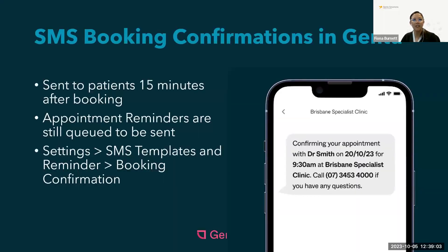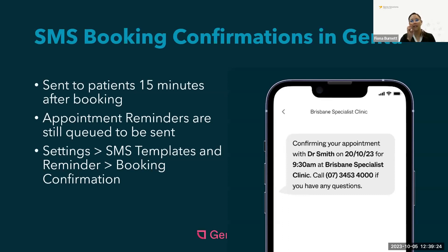Another new feature introduced most recently within Gen 2 is booking confirmation SMSs. These booking confirmation SMSs are sent to patients 15 minutes after booking in their appointment into Gen 2 for the first time. All patients will continue to receive an appointment reminder in addition to the booking confirmation. To turn on this feature, you can go to Settings, SMS Templates and Reminder, Booking Confirmation.